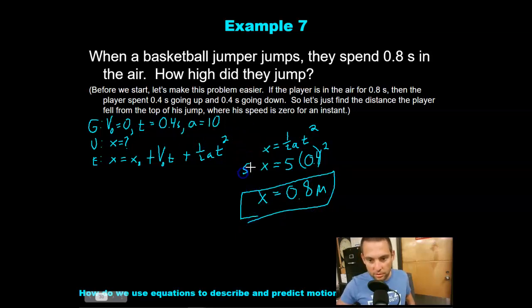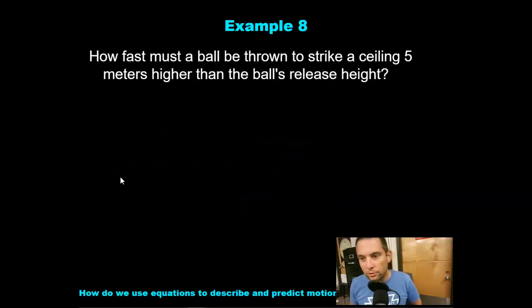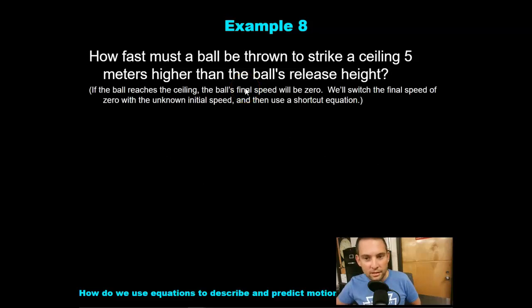There you go. That was our substitute. And then the solve. How fast must a ball be thrown to strike a ceiling 5 meters higher than the ball's release height? So we are throwing a ball at the ceiling that is about 15 feet above our head. If the ball reaches the ceiling, the ball's final speed will be 0. We'll switch the final speed of 0 with the unknown initial speed.